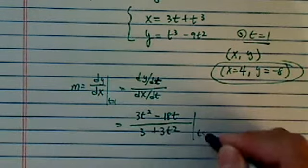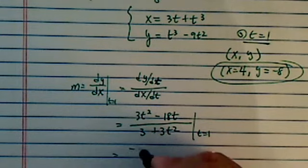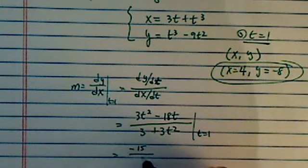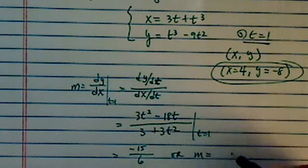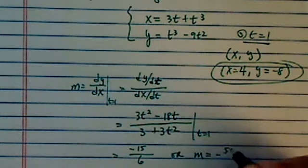We're going to evaluate t equal to 1, and we have minus 15 on top and I have a 6 on the bottom, or basically m we're looking for here is minus 5 over 2.